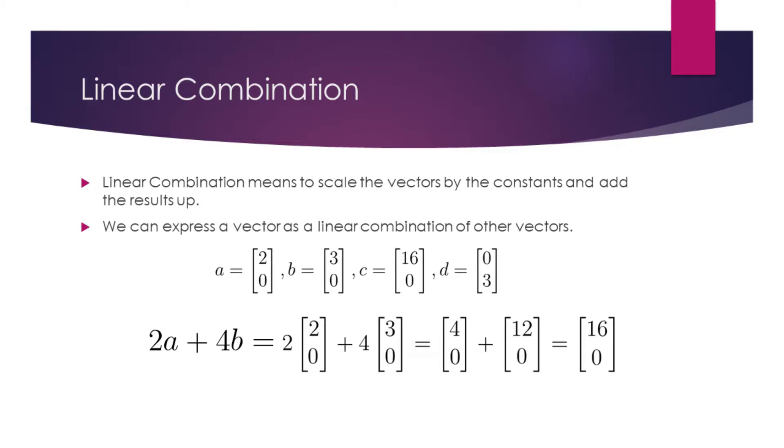Linear combination means to multiply vectors by the constants and add the results up. We can express a vector as a linear combination of other vectors.